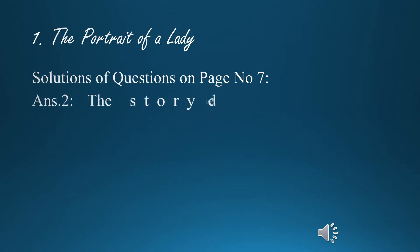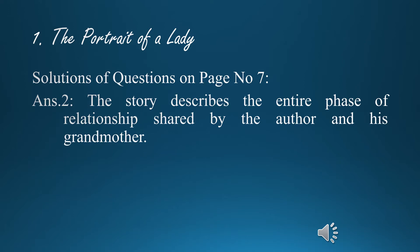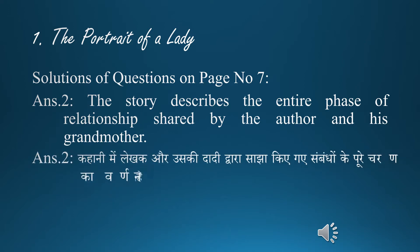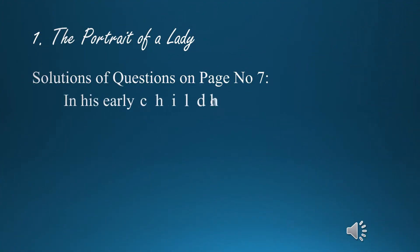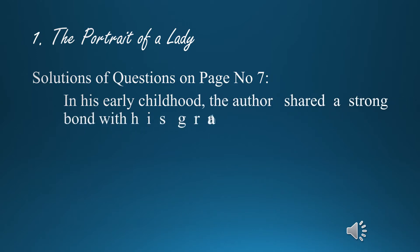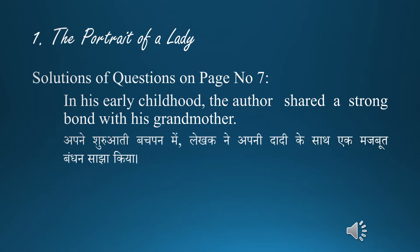Answer 2: The story describes the entire phase of relationship shared by the author and his grandmother. In his early childhood, the author shared a strong bond with his grandmother. — Kahaani mein lekhak aur uski dadi dwara saajha kie gaye sambandho ke pure charam ka varnan hai. Apenne shuruwati bachpan mein, lekhak ne apeni dadi ke saath eek majboot bandhan saajha kiya.